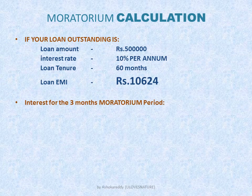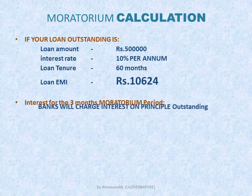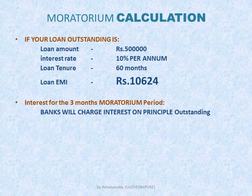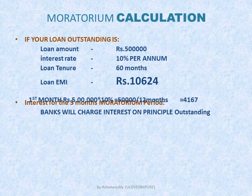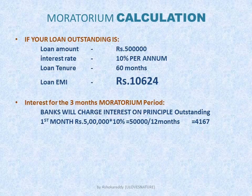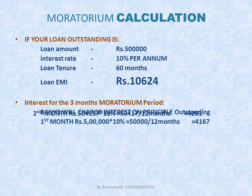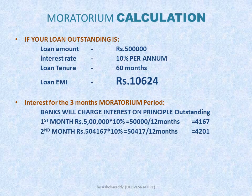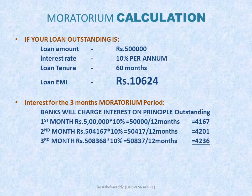Now we will see interest for the 3 months moratorium period. Banks will charge interest on the principal outstanding of your loan. So on your total outstanding of Rs. 5 lakh, the first month interest will be Rs. 4,167, the second month interest is Rs. 4,201, and the third month interest is Rs. 4,236.